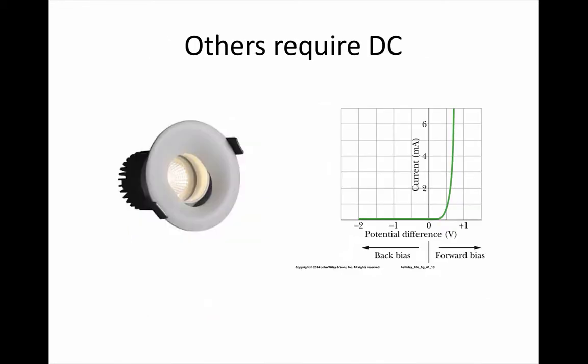But other devices need to have the current flowing one way only. One example is the light emitting diode. A diode is a one-way gate for current. The voltage current graph for one is shown on the right. You can see that when the voltage is positive for that diode, you get increasing current for increasing voltage, which is not too unlike a standard resistor, though you can see it's not ohmic because it isn't a straight line.